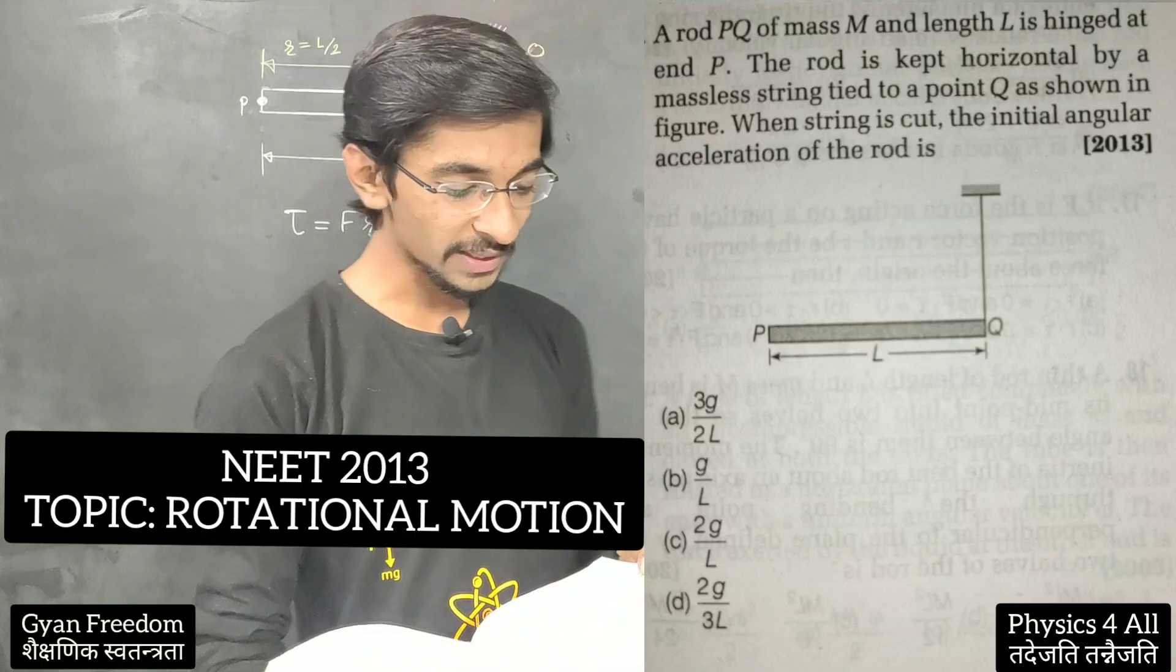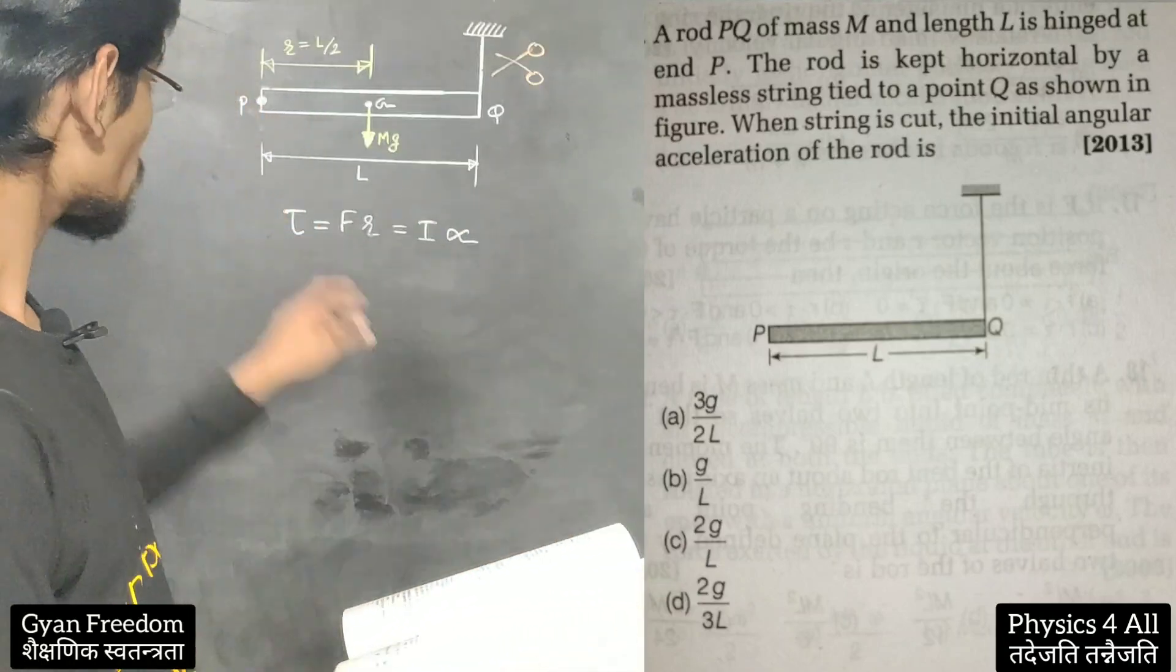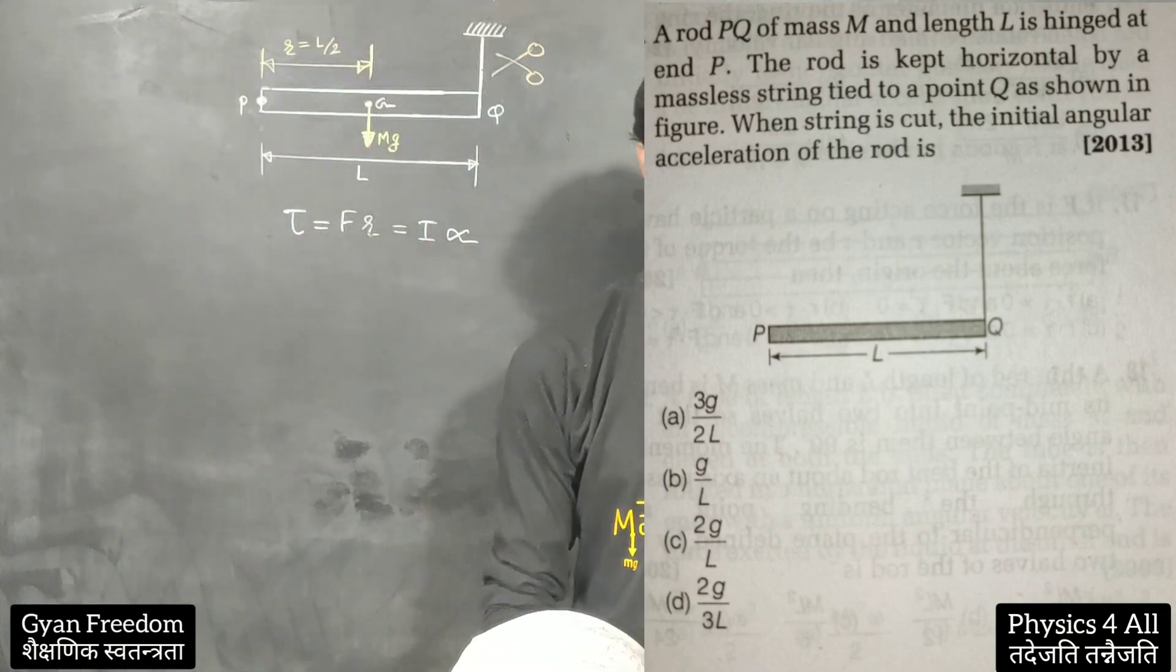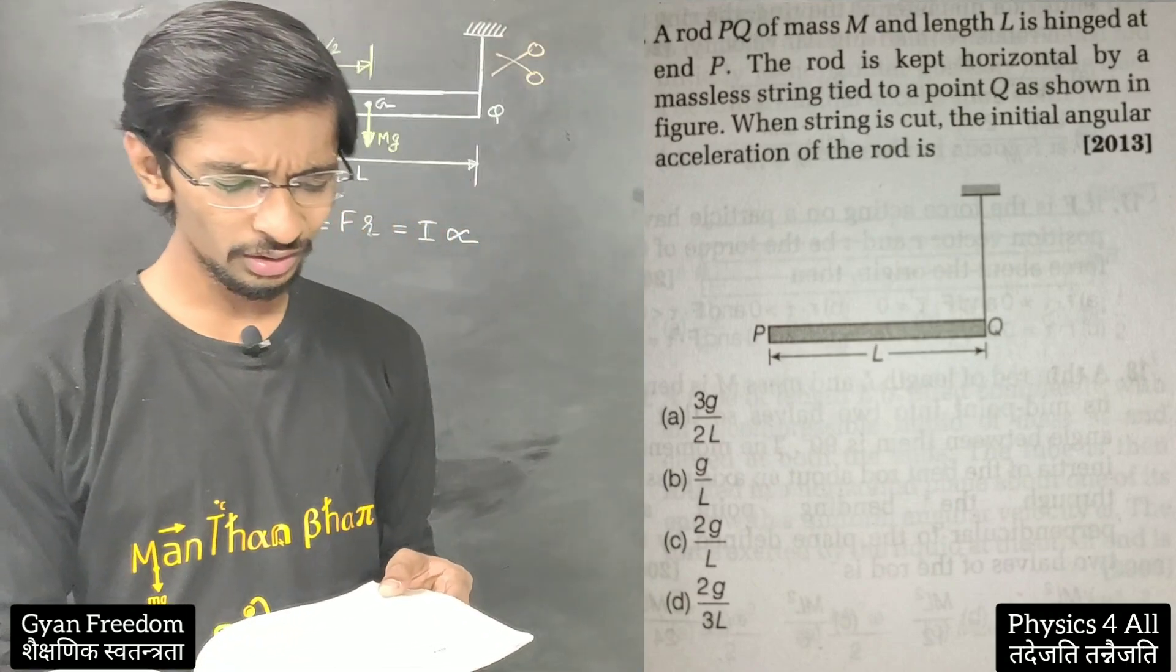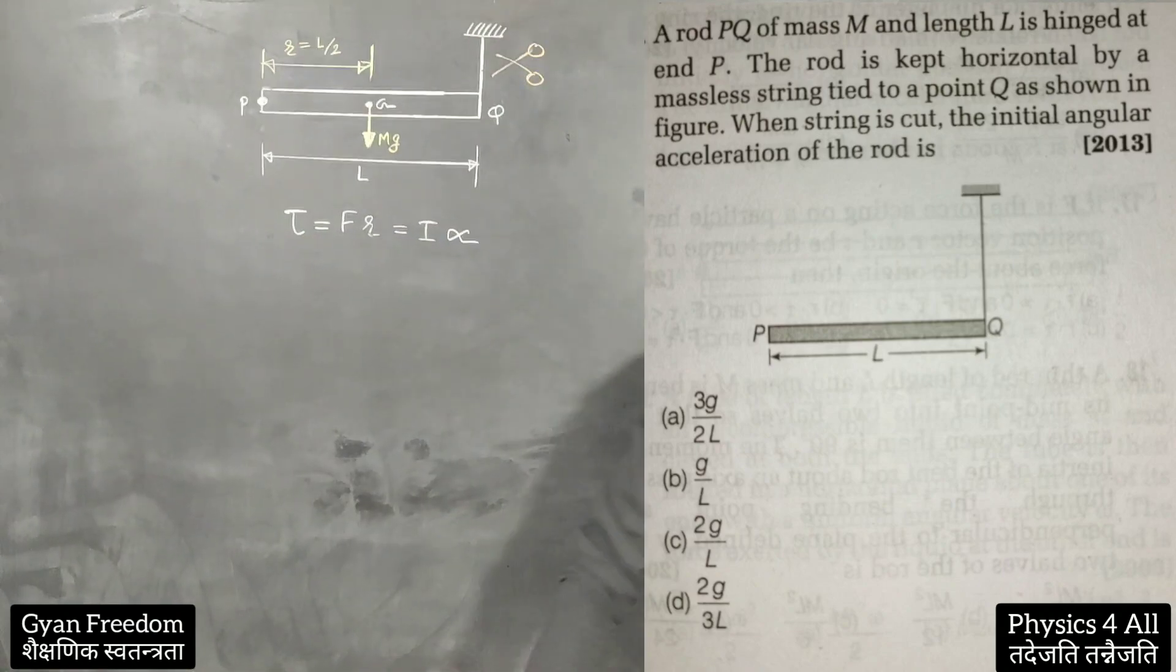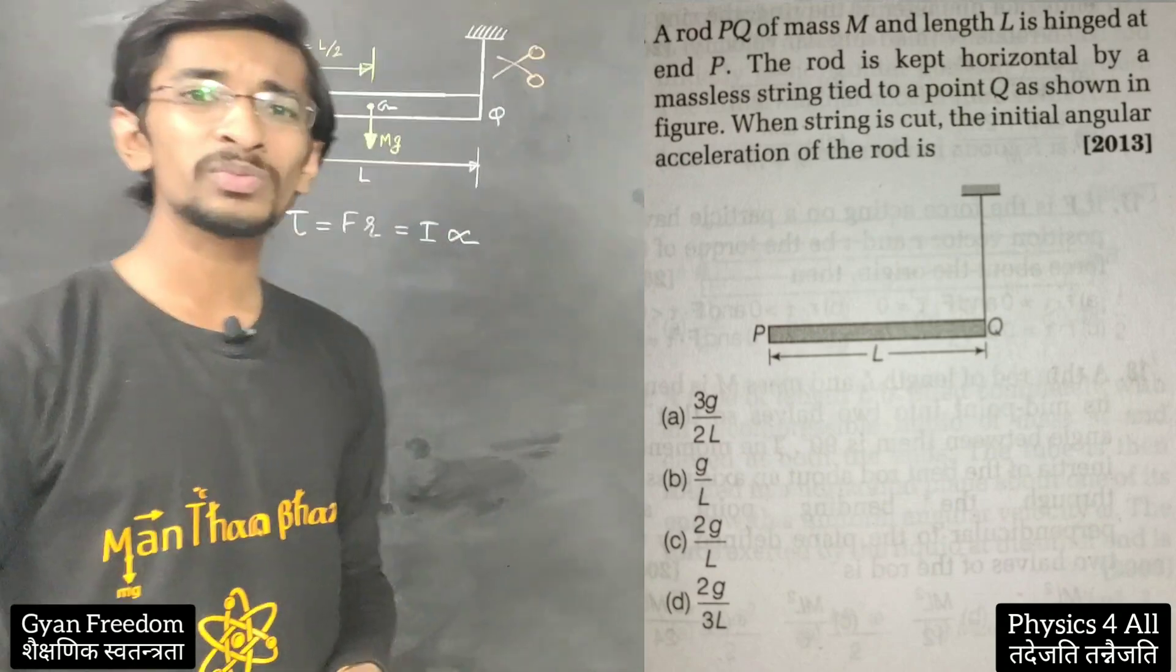So the question is, a rod PQ of mass capital M and length capital L is hinged at point P. The rod is kept horizontally by a massless string tied to point Q as shown in figure. When the string is cut, the initial angular acceleration of the rod is, and all the options are in terms of G and capital L.